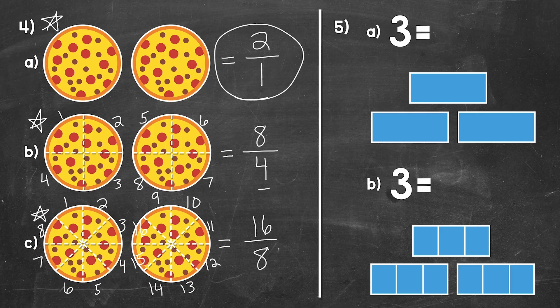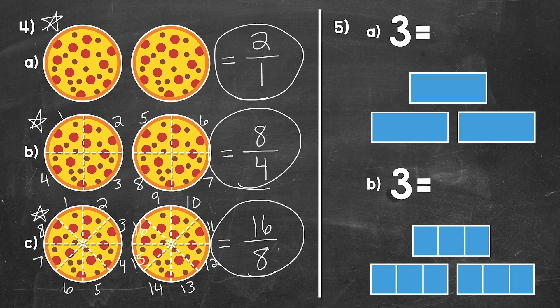All three of these fractions — two over one, eight over four, and 16 over eight — are equivalent; they all equal two. The most simple way to write a whole number as a fraction is to put the whole number over one, but we need to be familiar with equivalent fractions as well, because when working with fractions and whole numbers, we will sometimes need these equivalent forms.